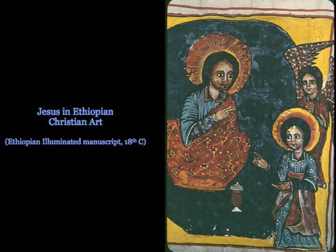Here's an Ethiopian depiction of Christ, and of course he's African. This is King Lalibela, who had a vision of Christ in Heaven and was told by Christ to build the great rock-cut churches of Lalibela.